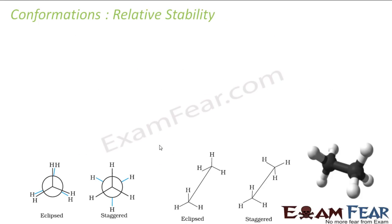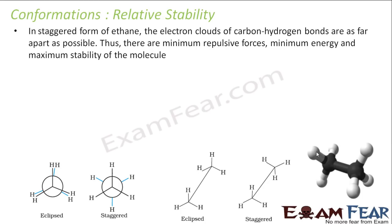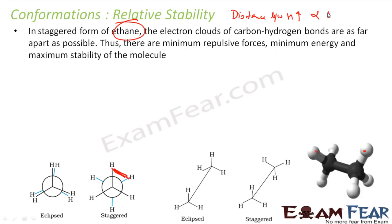Now let's talk about the relative stability of conformations. Maximum repulsion means minimum stability. In the staggered ethane conformation, the two sets of hydrogens are as far apart as possible — distance is maximum, repulsion is minimum, and thus stability is maximum. So: increasing distance between hydrogens implies decreasing repulsion, which implies increasing stability.